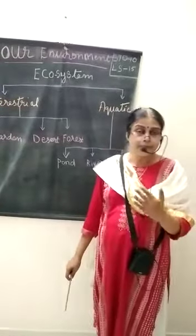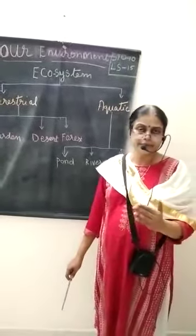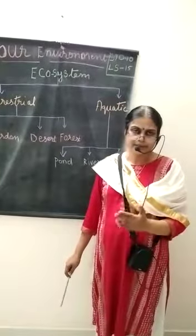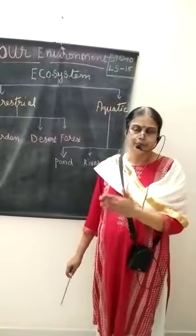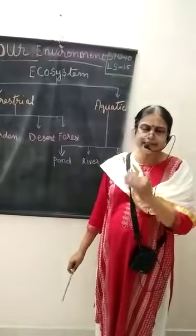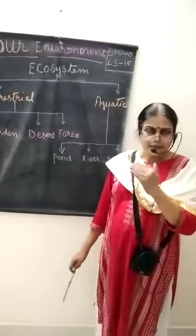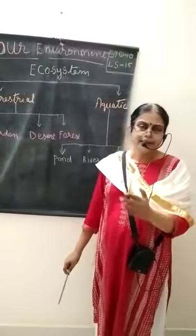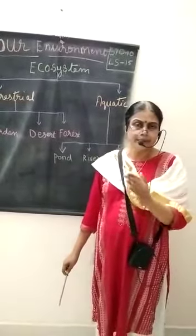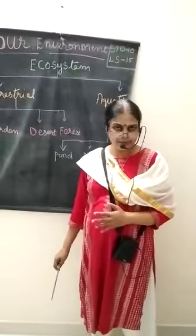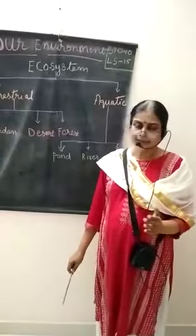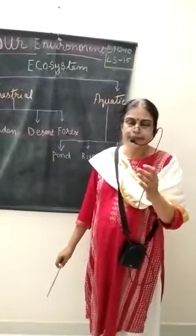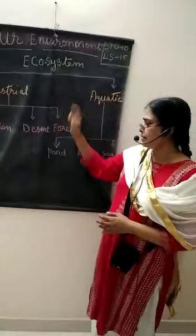Non-living factors are called abiotic — for example, temperature, light, and humidity. All the physical factors which are necessary for living organisms to survive in this environment are called abiotic factors. So biotic factors and abiotic factors together form what we call an ecosystem.